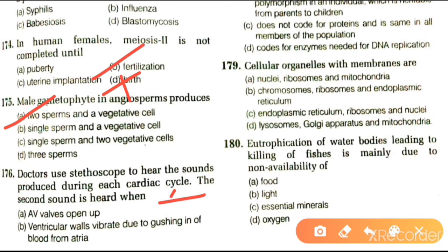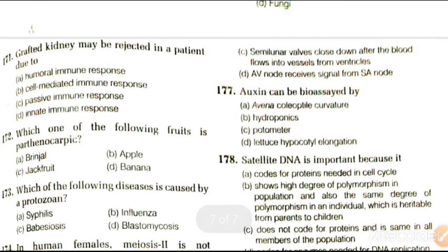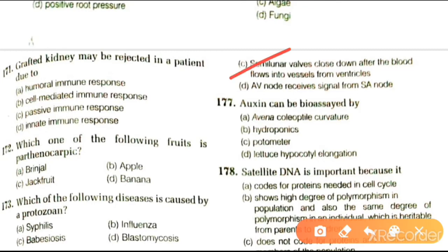Next question: doctors use a stethoscope to hear the sound produced in each cardiac cycle. The sound we hear — when AV valve opens, ventricular valve vibrates due to rushing of blood from atria, or semilunar valve closes during blood flow into vessels from ventricles. The heart produces two types of sounds: 'lubb' and 'dubb'.